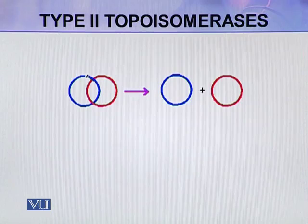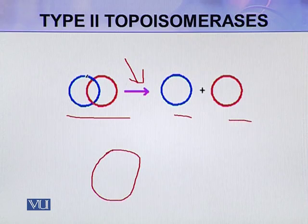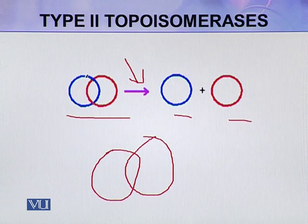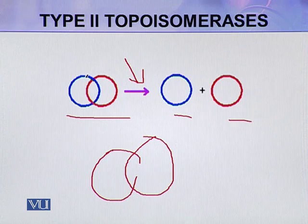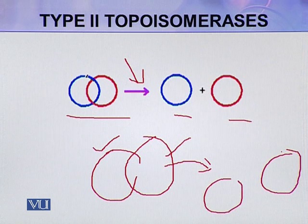After replication, these two DNA molecules or chromosomes are catenated. The topoisomerases act and the two get separated. For two circular chromosomes, they break one chromosome and then remove the second double-stranded DNA through that break, so it is segregated from the first chromosome, resulting in two separate chromosomes.